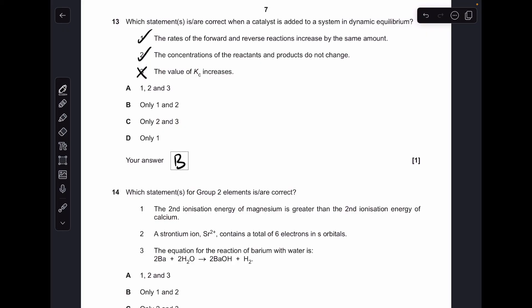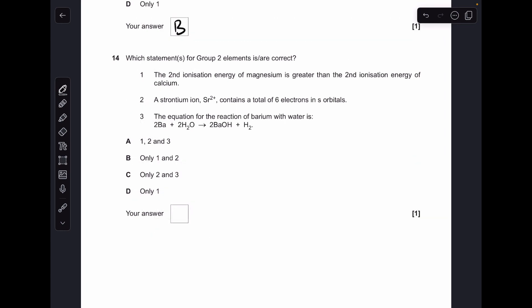Number 14, so testing the statements again to see which ones are correct. Second ionization energy of magnesium greater than the second ionization energy of calcium. That's correct, because magnesium is higher up the group, so to remove its second electron it's going to take more energy than calcium. So we'll correct for that one.